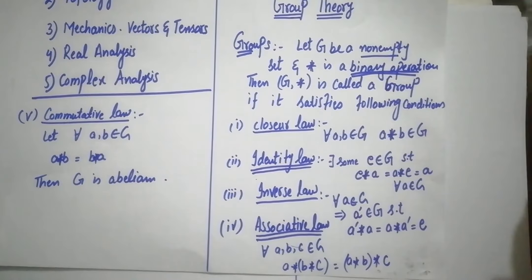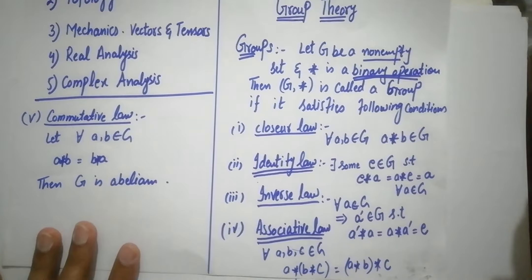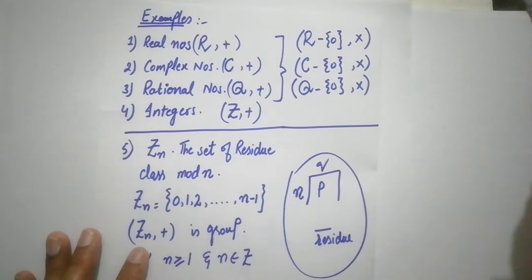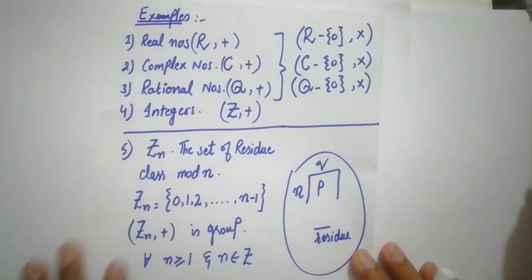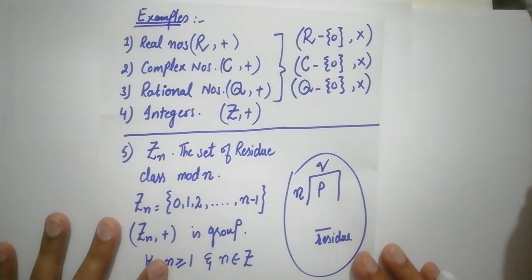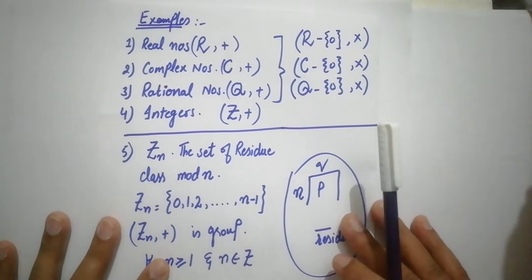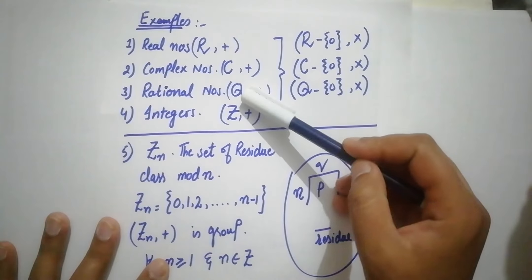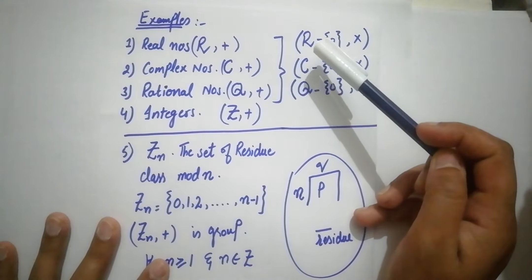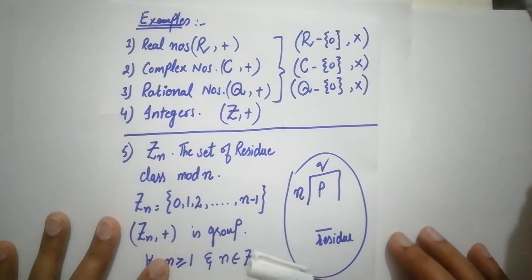Now, we go to some real-life examples. I have the first four examples which are real-life sets: Complex numbers, Rationals, Integers, and Real numbers. These four sets are under the addition group. And these three sets — Reals, Rationals, and Complex numbers — are under the multiplication group. But you have to note that we ignore zero from these three sets.